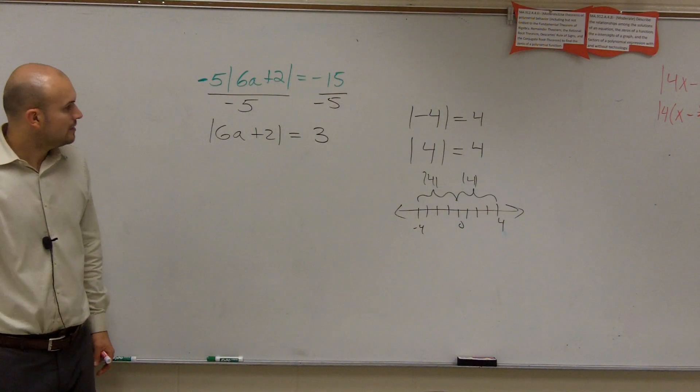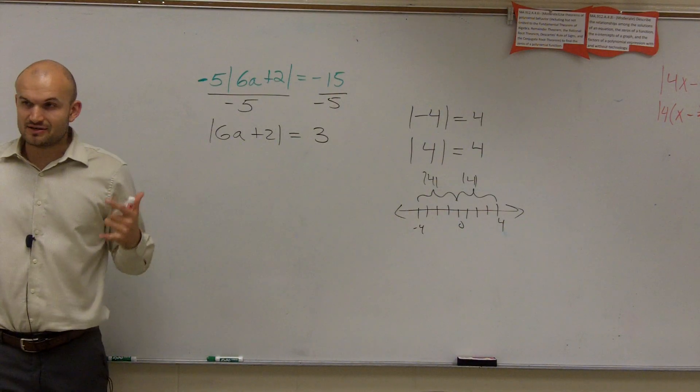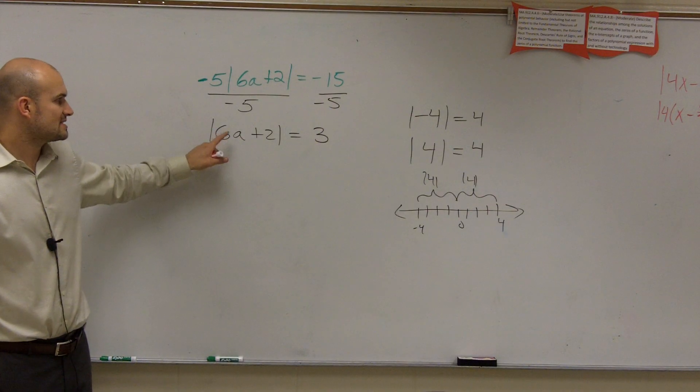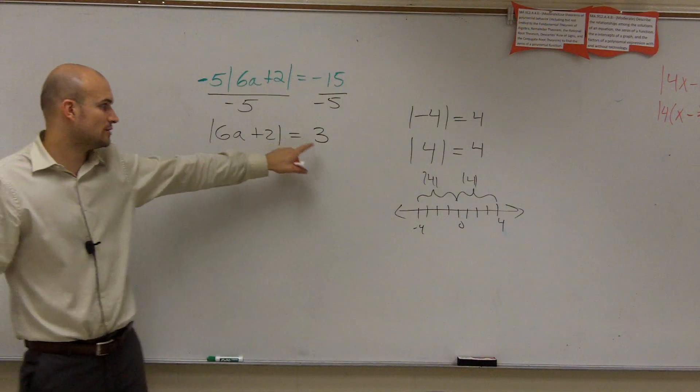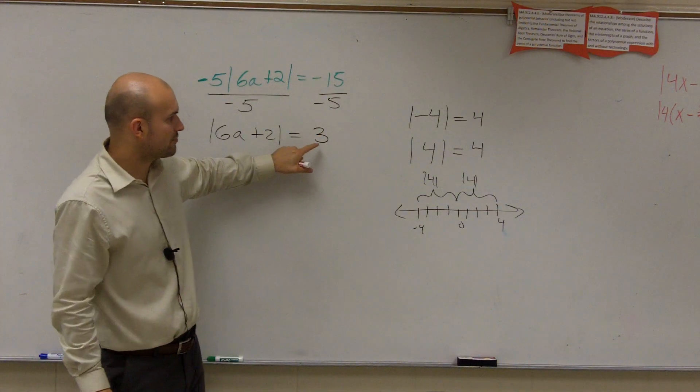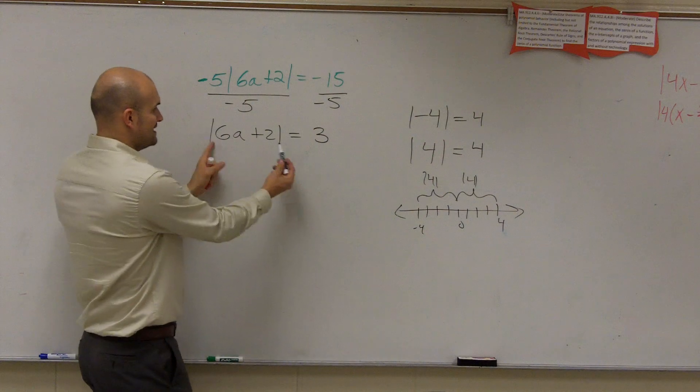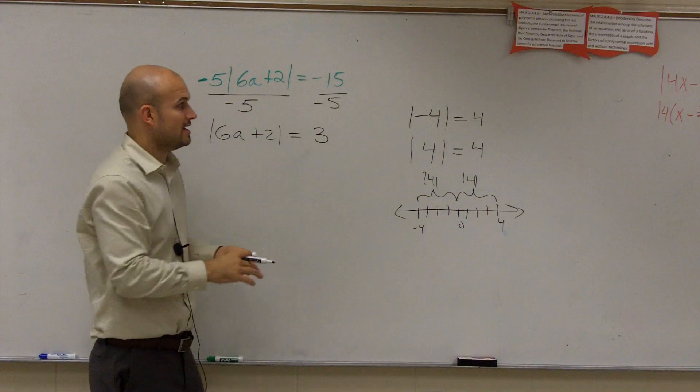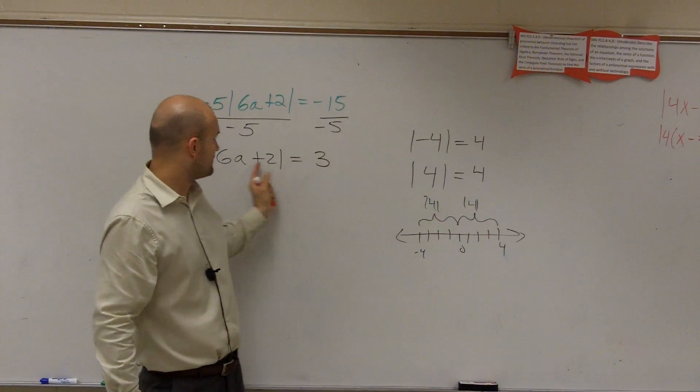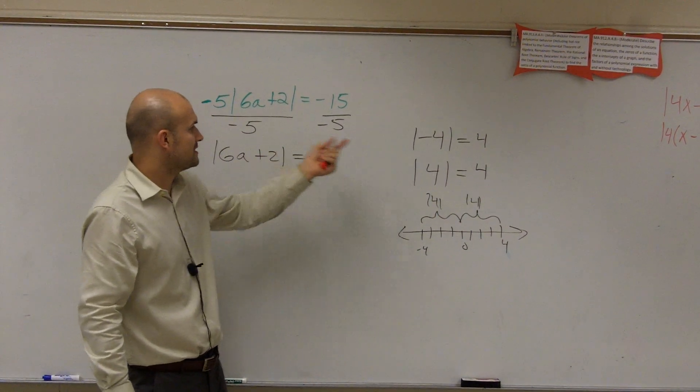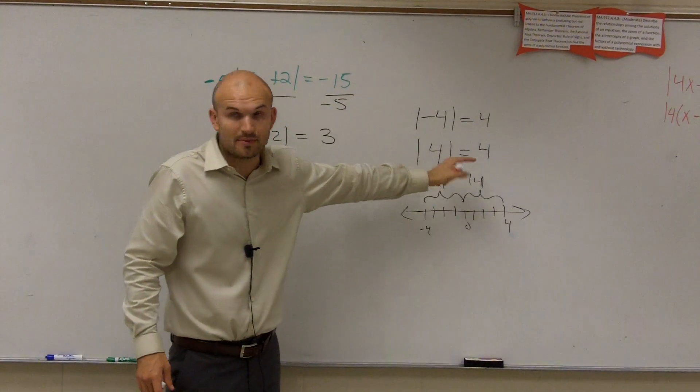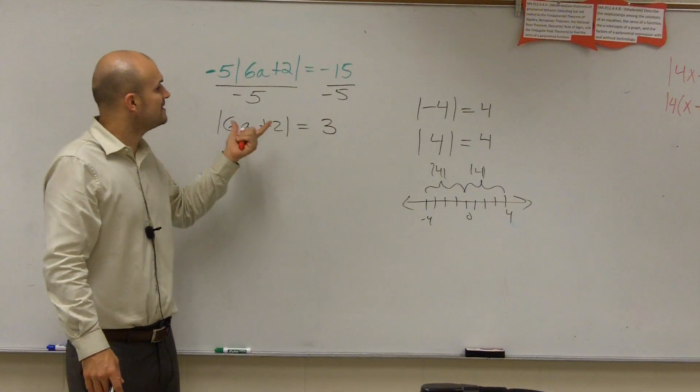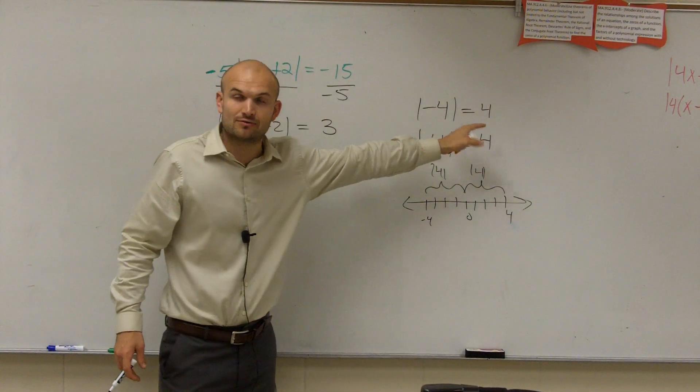So what this states, if I was going to say this out loud, the absolute value of 6 times a number plus 2 is equal to 3. Now, remember, for it to equal 3, we could have inside of here it could be positive 3, or inside of here it could equal negative 3. Because if it equals positive 3, then the positive version of an absolute value equals that number. And this inside here could also equal negative 3, because the negative value of an absolute value also equals 3.